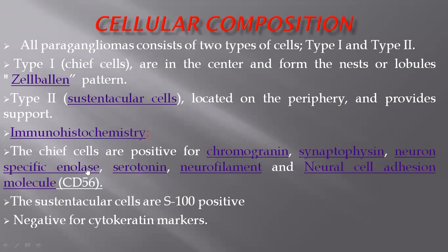The common neuroendocrine markers positive in chief cells include chromogranin, synaptophysin, neuron-specific enolase, serotonin, neurofilament, and neural cell adhesion molecule (CD56). The sustentacular or supporting cells at the periphery are S100 positive. These cells are hard to see on H&E, so they can be beautifully demonstrated with S100 staining.